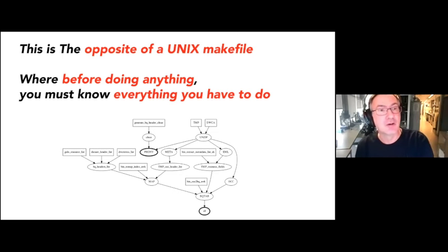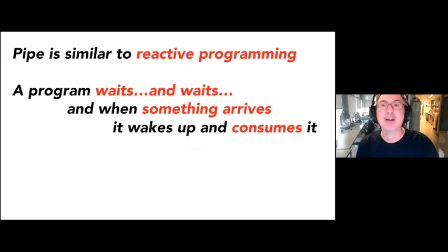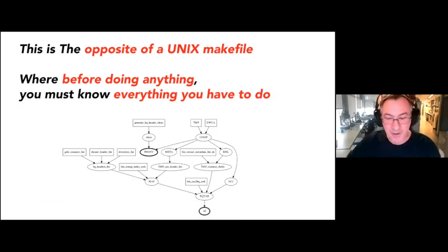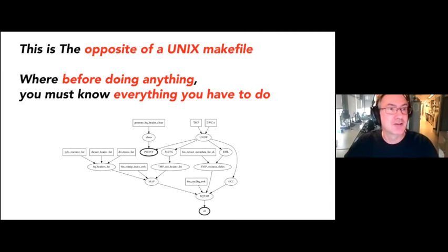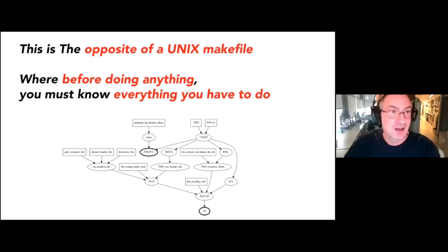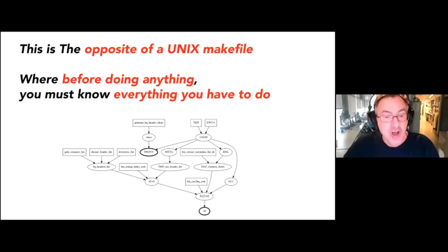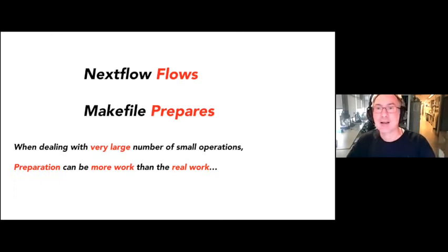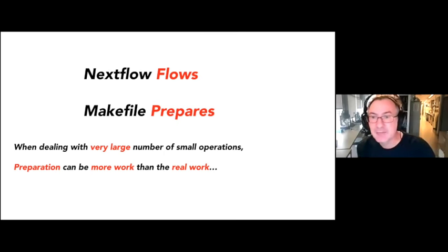We decided to go for a reactive programming way of doing this, and that makes a huge difference. We don't need to compute the graph, but it's harder to do a dry run. The alternative to Nextflow was Snakemake, which was built on top of Makefile. Nextflow flows data; Makefile prepares data. That's really the main difference. In a small instance it makes no difference at all, but with Snakemake every once in a while you hit the wall because you've gone over what could be pre-computed. With Nextflow, you never hit this wall because the computation scales with your capacity.